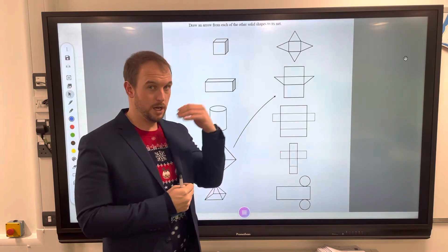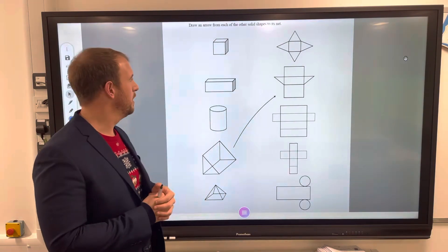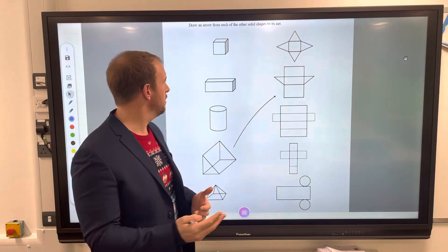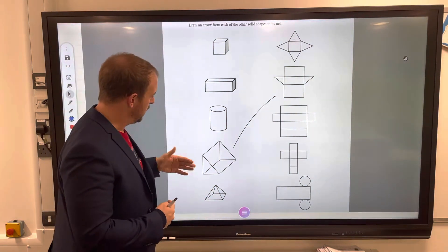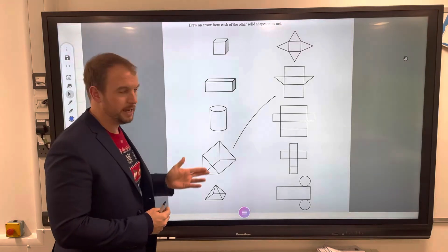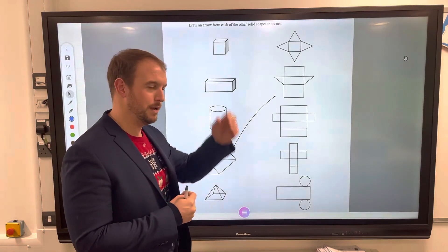Then we're going to think about our 3D shapes. Now this is obviously a cube, cuboid, cylinder, a triangular prism, and then a square based pyramid. So now we have to use some visualization.